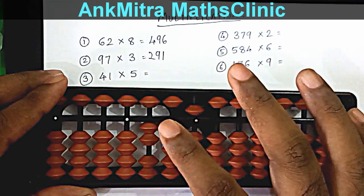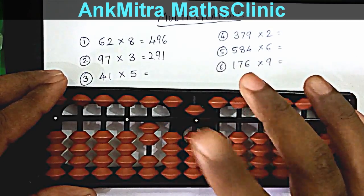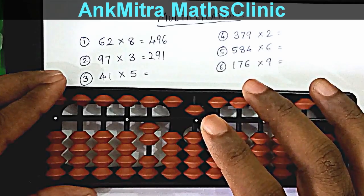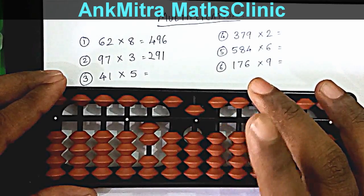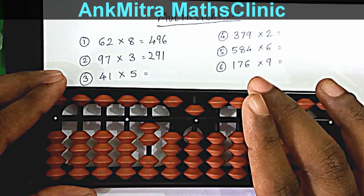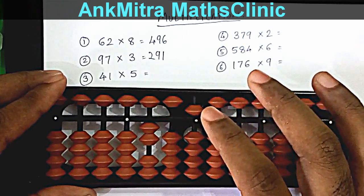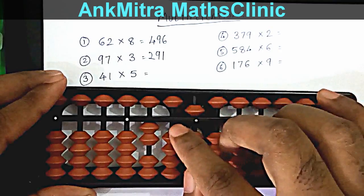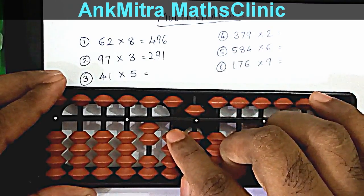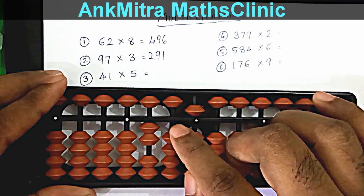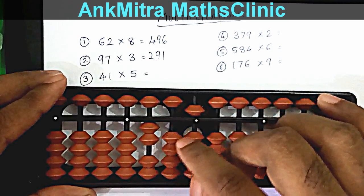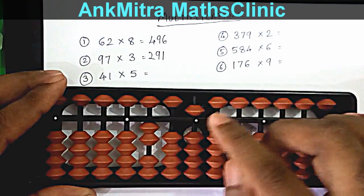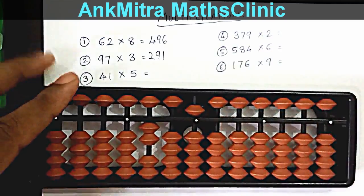The answer is 205. We must be very careful in this kind of sum to ensure we read a two-digit answer for any one-digit table result. If we just took 5 directly, it would land on the tens place and the number would read as 250 — but the correct answer is 205.